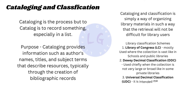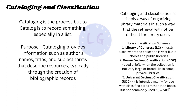As you can see, there are three main library classification schemes: LC, DDC, and UDC. UDC is not very commonly used — we use mainly LC and DDC. The definitions for these have been outlined there for you.